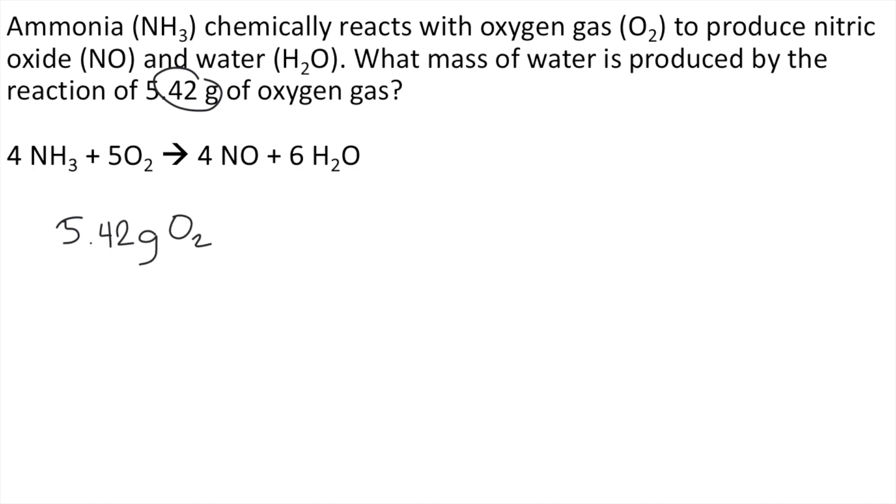The first step is to convert grams of O2 into moles of O2. So how do we do this? We need the molar mass of O2. If you compute the molar mass of oxygen gas, 1 mole of O2 is equivalent to 32 grams of O2. So the grams of O2 would cancel out. Now you have the moles of O2.